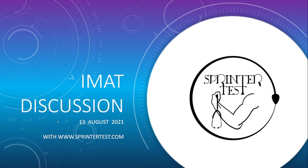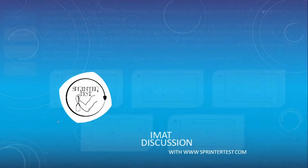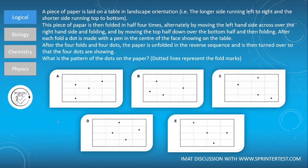Without further ado, let's move to the first question of the day. A piece of paper is laid on a table in landscape orientation — the longer side running left to right and the shorter side running top to bottom. This piece of paper is then folded in half four times, alternately by moving the left hand side across over the right hand side and folding, and by moving the top half down over the bottom half and folding. After each fold, a dot is made with a pen in the center of the face showing on the table. After the four folds and four dots, the paper is unfolded in reverse sequence, then turned over so that the four dots are showing. What is the pattern of the dots on the paper? Dotted lines represent the fold marks.